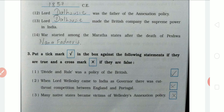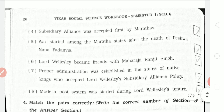Second number: when Lord Wellesley came to India as Governor General, there was a cut-throat competition between England and Portugal — this is wrong. Third number: many native states became victims of Wellesley's annexation policy — this is wrong because it relates to the Subsidiary Alliance policy. Fourth number: the Subsidiary Alliance was accepted first by Maratha — this is wrong; it was accepted first by Nizam.